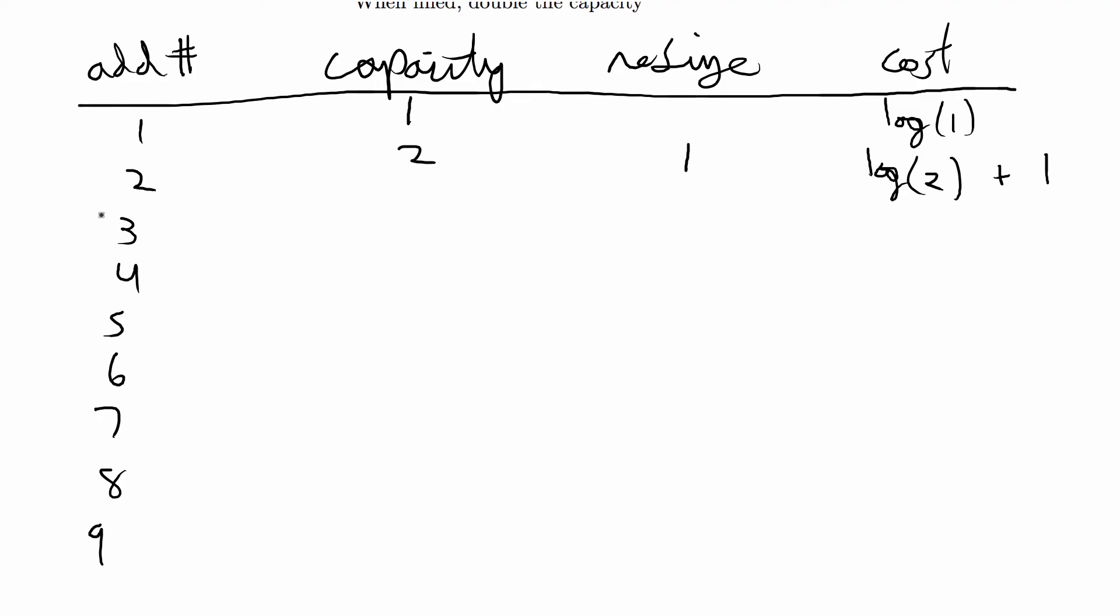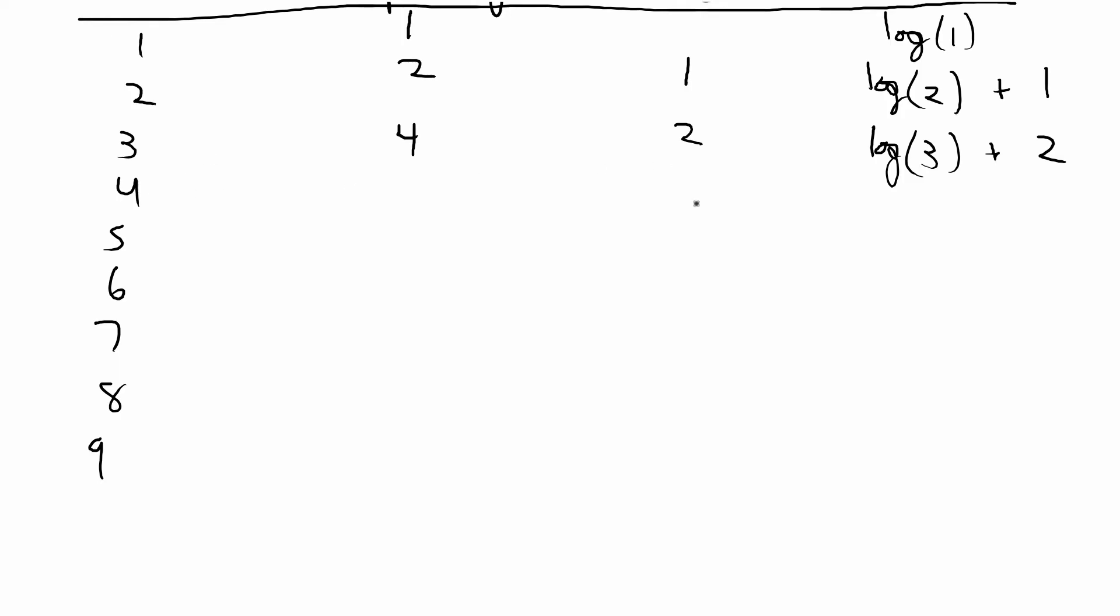Our capacity is 2. To add a third item to the heap we're going to have to resize again. So now our capacity is 4 and the cost is going to be log 3 plus the cost of adding 2. We don't have to resize to add 4, so our capacity is still 4. We leave this blank and it's going to just be log 4 for the cost.